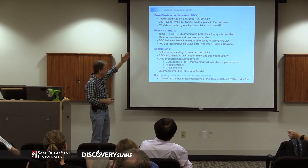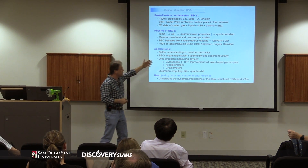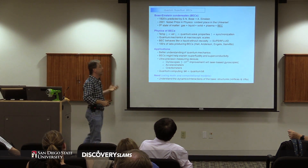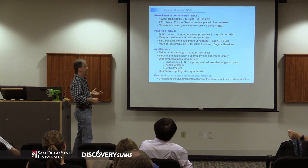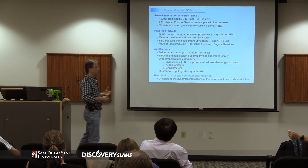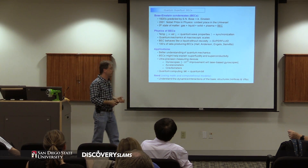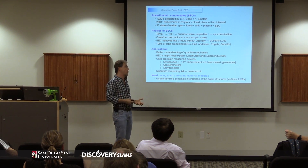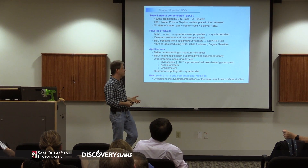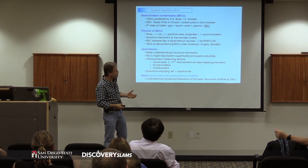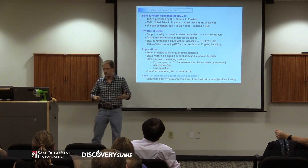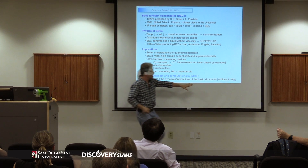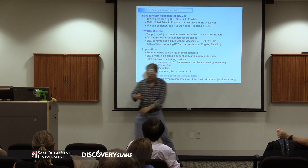In order to try to do all these things, you need to understand how this matter behaves. And in order to understand how this matter behaves, you need to understand how the basic structures in this matter behave. The basic structures that you will see in this matter are vortices and vortex rings.